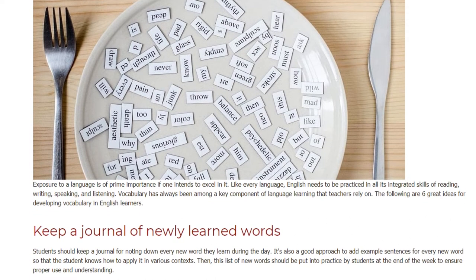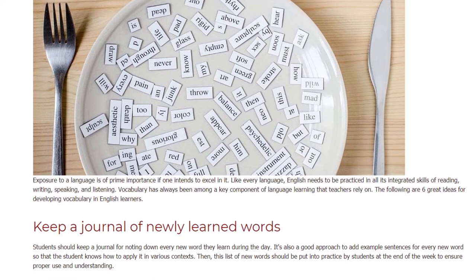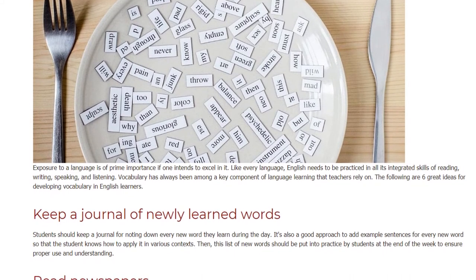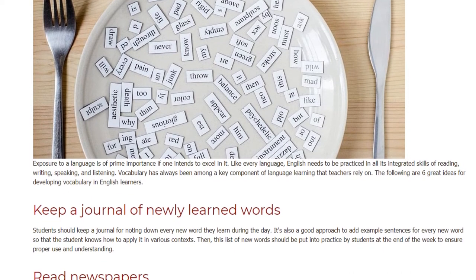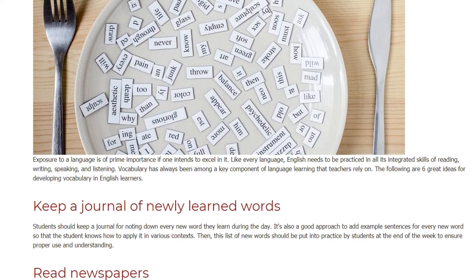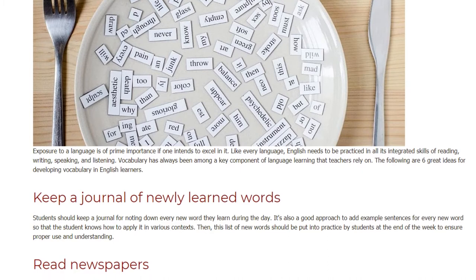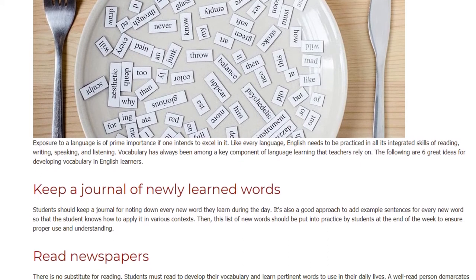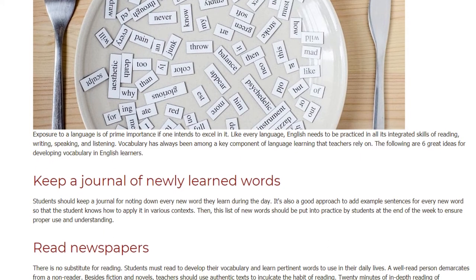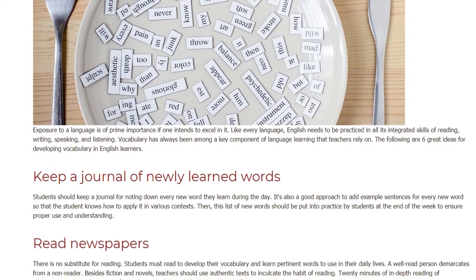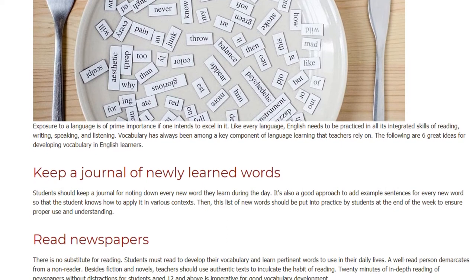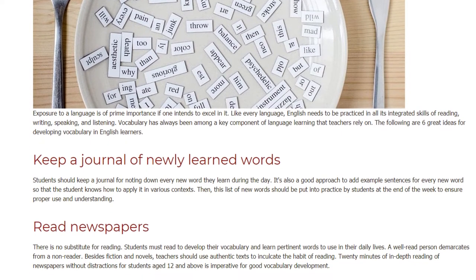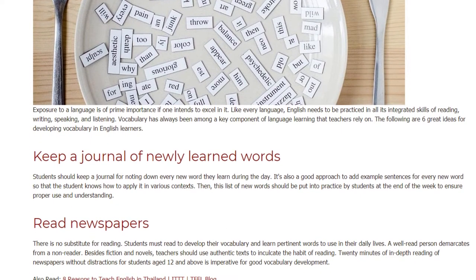The following are six great ideas for developing vocabulary in English learners. Keep a journal of newly learned words. Students should keep a journal for noting down every new word they learn during the day. It's also a good approach to add example sentences for every new word so that the student knows how to apply it in various contexts.